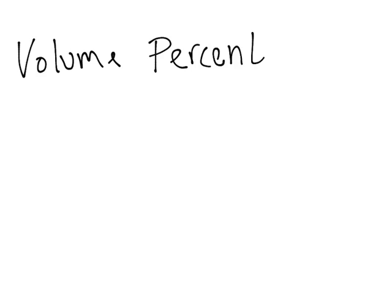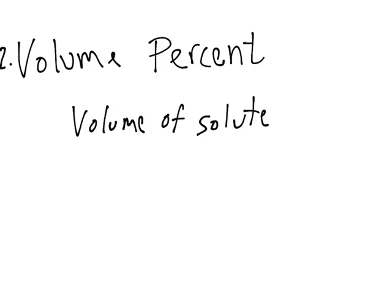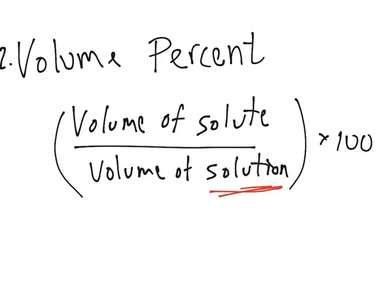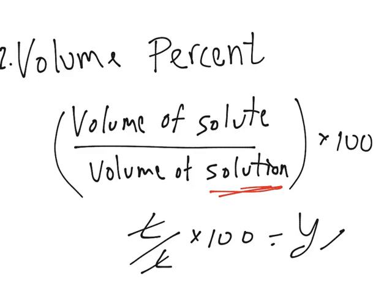The second unit of concentration we're going to talk about is volume percent. It is basically the same as the mass percent, just instead of using grams, you will use liters. The formula is volume of solute over volume of solution, times 100. Remember this is solution, not solvent. Both values will be in liters, they cancel out, and you have the 100, so this will also be a percentage.